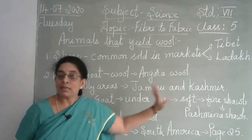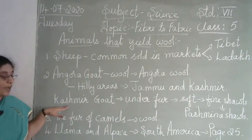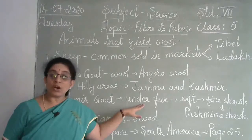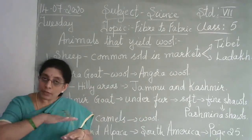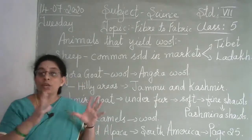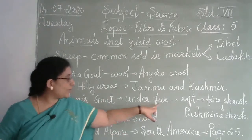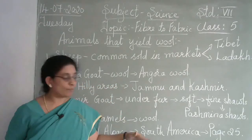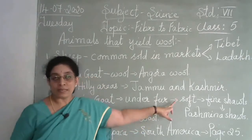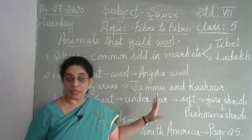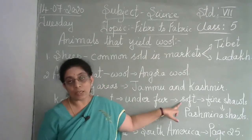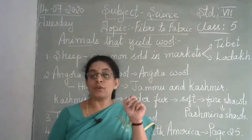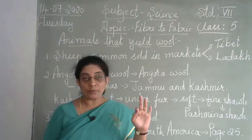Mainly in Jammu and Kashmir there is another goat called the Kashmir goat. This Kashmir goat has fur not only on the top layer but also near the skin — called underfur. It has one more layer of hair above the top layer. This produces a very very soft type of wool, found only from the Kashmir goat in all of India.